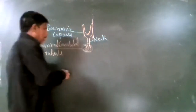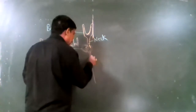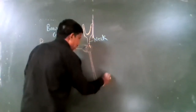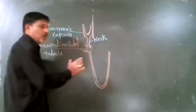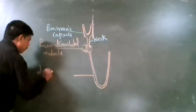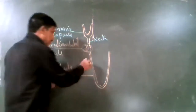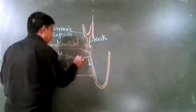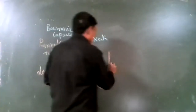The proximal convoluted tubule gives a duct which descends down and again ascends, forming a loop called the loop of Henle. The loop of Henle has two limbs: one limb goes downward, called the descending limb, and the other limb goes upward, called the ascending limb.